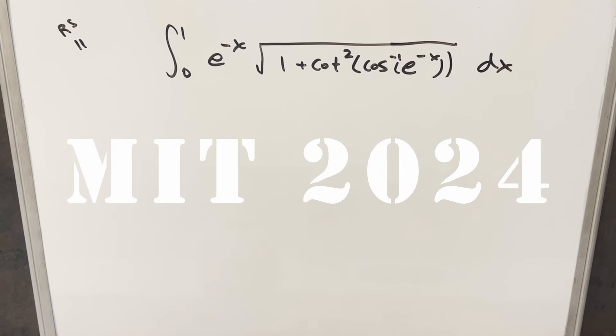We have here a pretty intimidating looking integral from the MIT Integration Bee 2024, regular season number 11. We have the integral from 0 to 1 of e to the minus x times the square root of 1 plus cotangent squared, arc cosine e to the minus x dx.